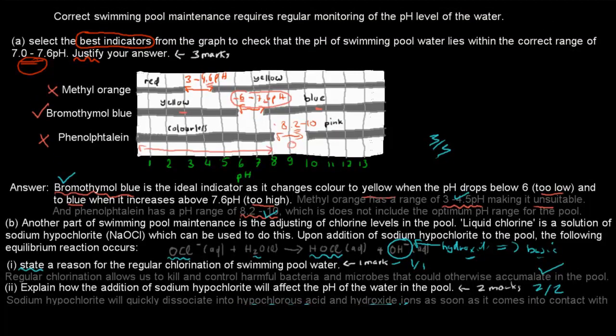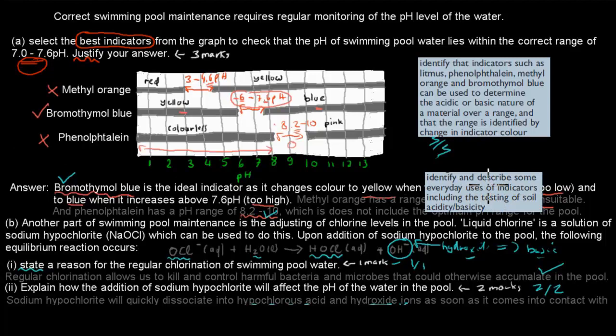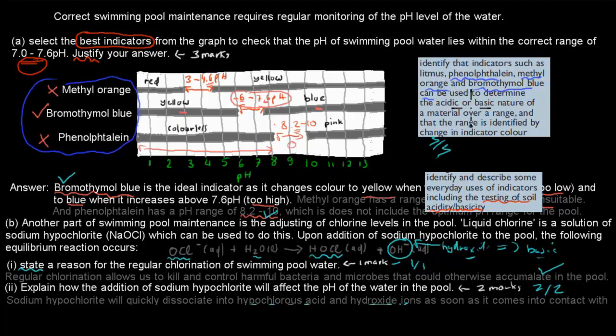And where do all these questions come from? They come from these dot points. So the first one was identify and describe some everyday uses of indicators, including testing of soil acidity and base acidity. Remember in that video we covered soil, but we also covered the swimming pool as well. So this question came from that one. And the other one was to do with using these different indicators. So identify indicators such as litmus, phenolphthalein, methyl orange, and bromothymol blue, which were all used here. These were all from there. It can be used to determine the acidity or basic nature of a material over a range. This was the whole range part, that they have their optimum range. And that a range is identified by changing color. So this first question, part A, came from that dot point. And part B came from the one about describing the everyday uses of indicators. So hopefully that was useful.